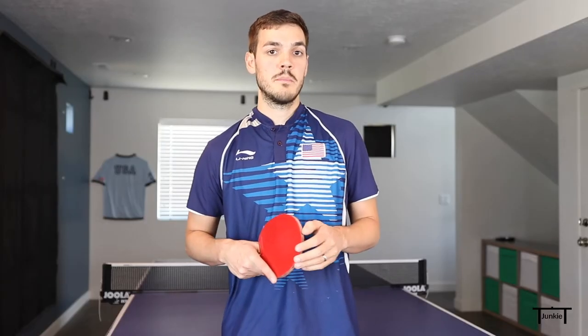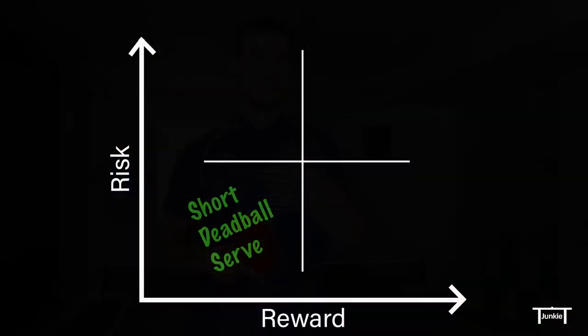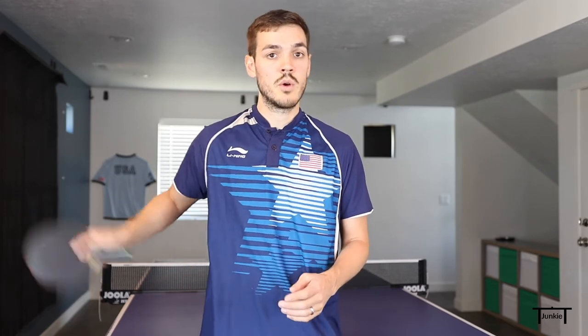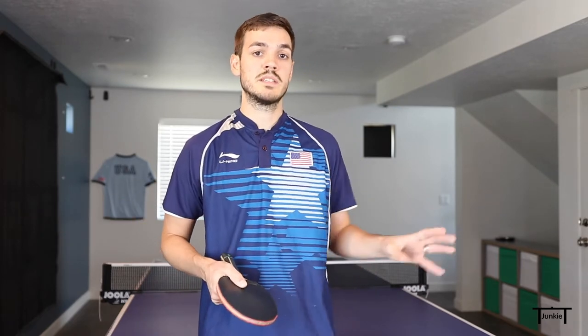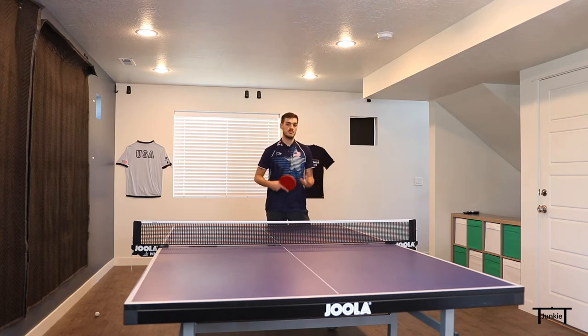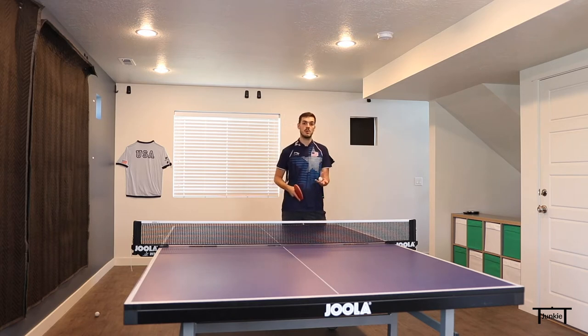Let's move on to an example of a high-risk, high-reward serve. An example might look like a fast, long serve where you're trying to catch your opponent off-guard and win the point quickly and without much effort. You've got to be careful with it, though, because if it's long, your opponent will have that opportunity to attack it, and also at the serving contact there's a lot of quick motion, so it's easy to make mistakes on this serve. Here's an example of the high-risk, high-reward serve — it's high-risk because my opponent is able to loop the serve, and it's high-reward because I'm trying to win the point outright by catching my opponent off-guard.